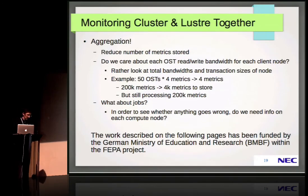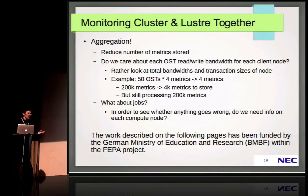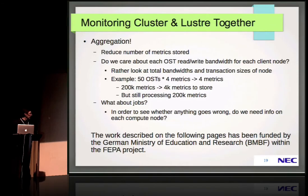Both approaches are okay. But which metrics do you keep for a job, and how do you store them? This is an unusual way of looking at metrics for normal monitoring systems, which are geared towards looking at compute nodes, not at job-aggregated metrics. In any case, we have scalability issues. The solution is aggregation of some sort — we need to reduce the number of metrics stored. We asked ourselves: do we really need to track each OST read/write bandwidth for each client node to find out which job is bad? Actually, no.